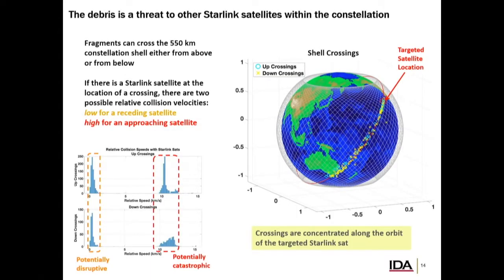There are two possibilities. Here are the entry points up through the shell and down through the shell. If the collision geometry is more of a glancing angle, the relative velocity won't be that high — it could disable the satellite but it might survive. On the other hand, if the collision is more head-on, you have relative velocities of 10 or more kilometers per second — that's going to kill your satellite; you're not living through that.